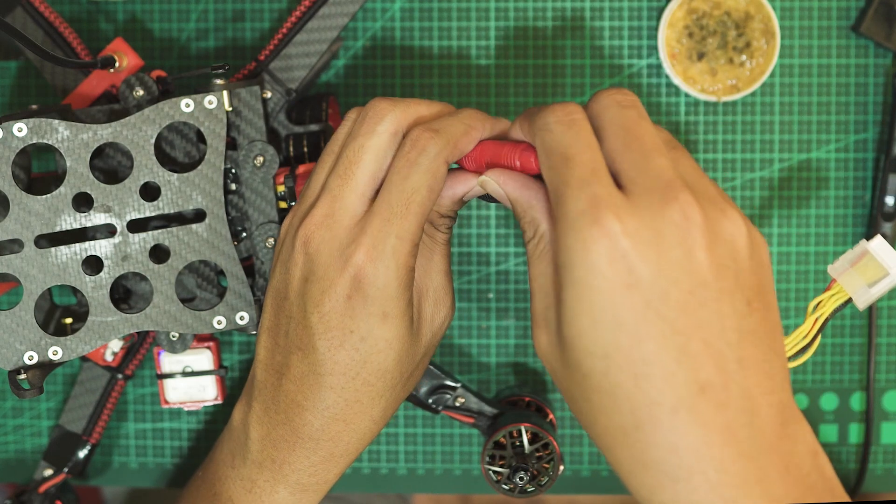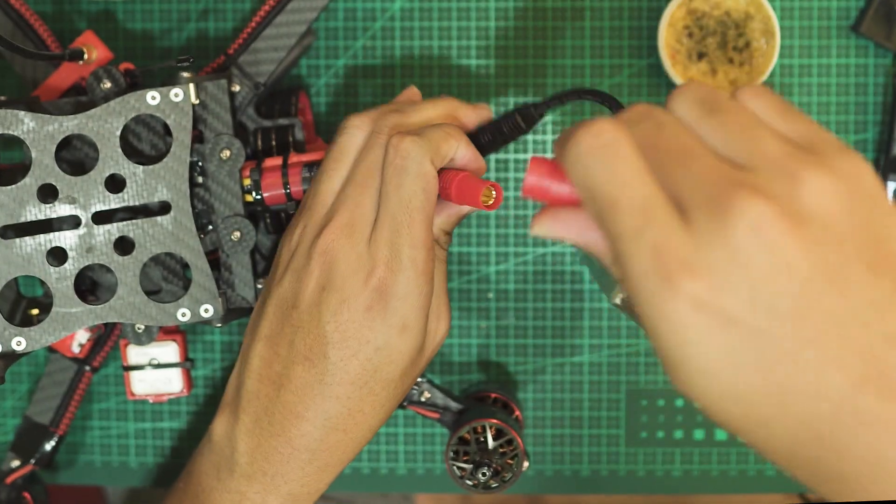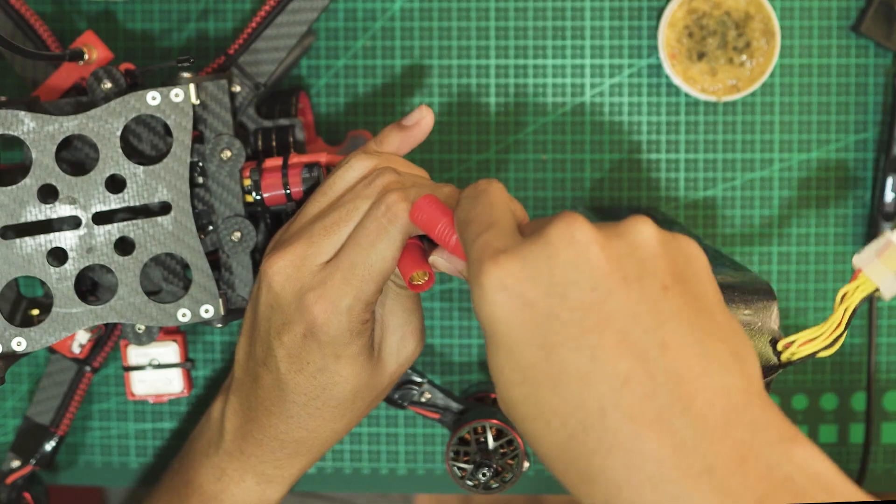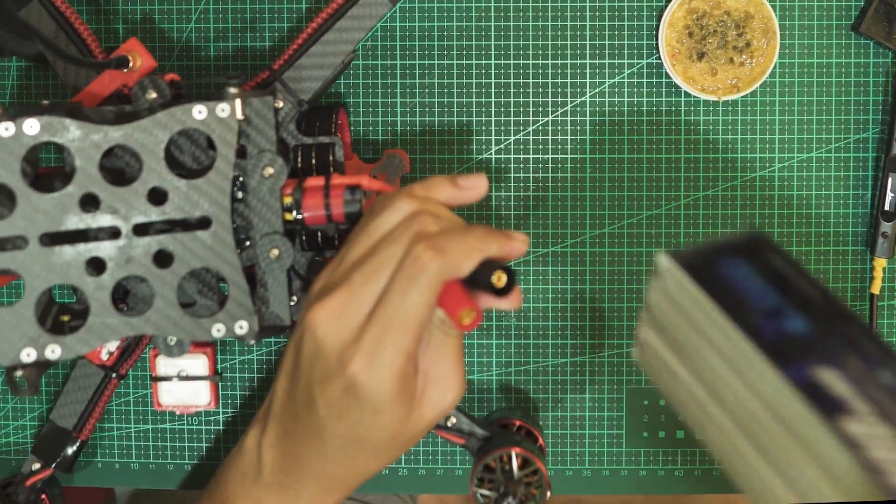And for removal, you would start out with the positive lead, removing that first, followed by the negative lead. Just like that.